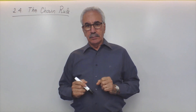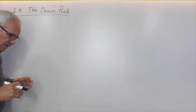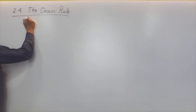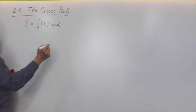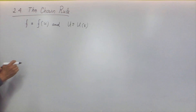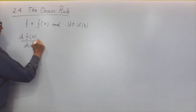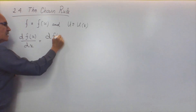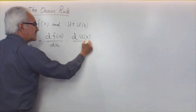As the name of the rule indicates, this is a chain, and we apply it when we have a function of a function. For example, if we have a function f which is a function of u, and at the same time u is a function of x, we apply the chain rule. The chain rule states that the derivative of f(u) with respect to x equals the derivative of f with respect to u, times the derivative of u with respect to x.